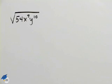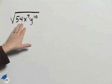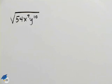To simplify this expression, we need to rewrite the argument as perfect squares and non-perfect squares.